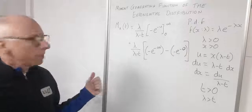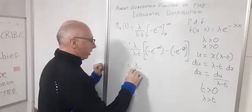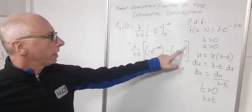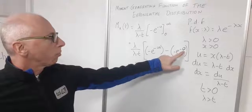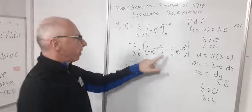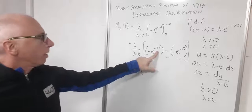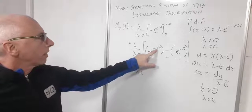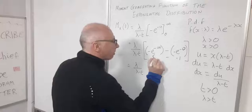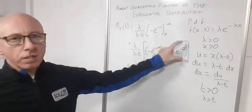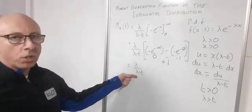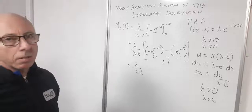Simplifying: e^(−0) = 1, so inside the bracket we have −(−1) = +1, and −e^(−∞) = 0. So the bracket evaluates to just +1, leaving us with λ/(λ − t) times 1 = λ/(λ − t).